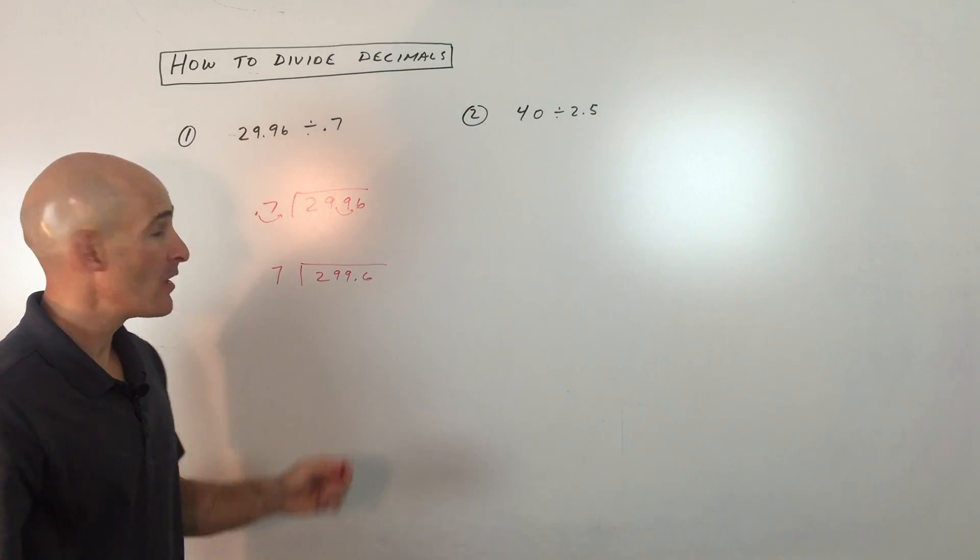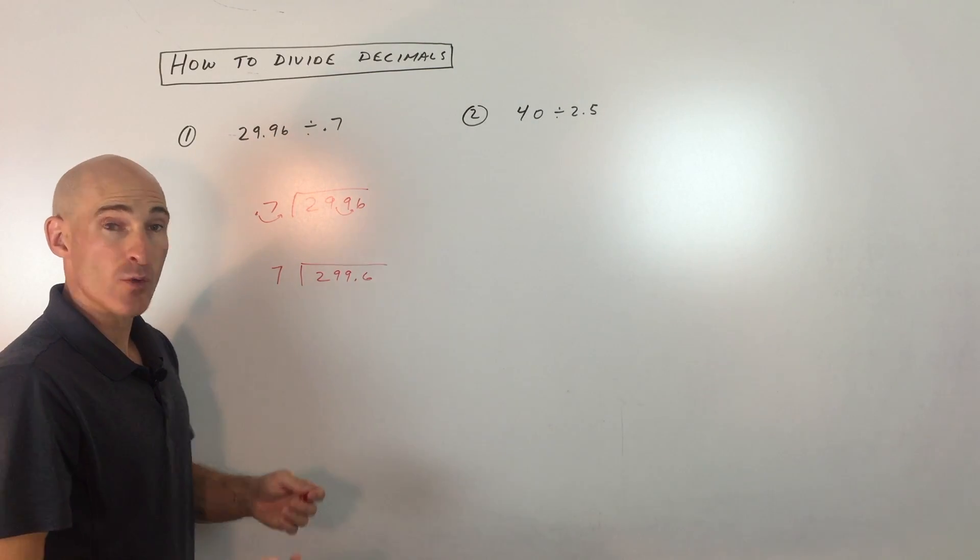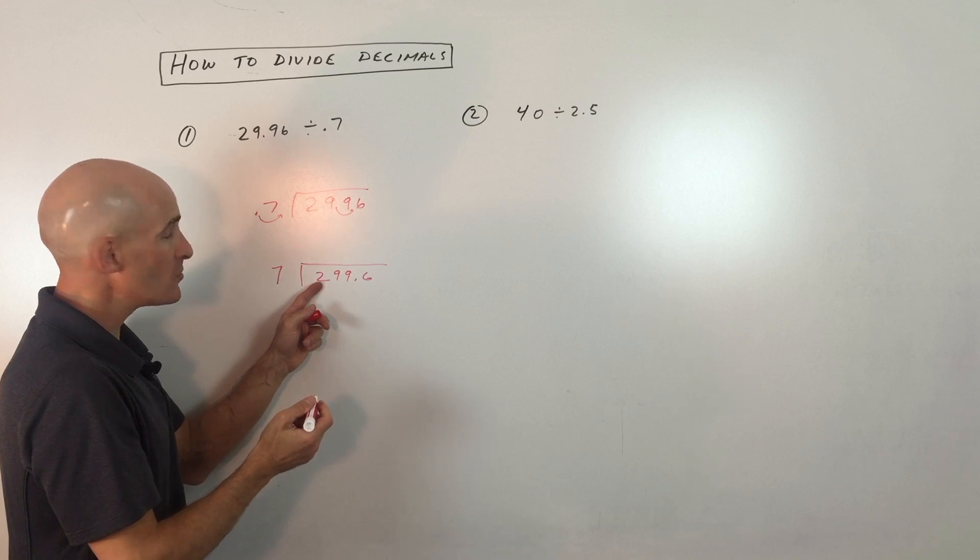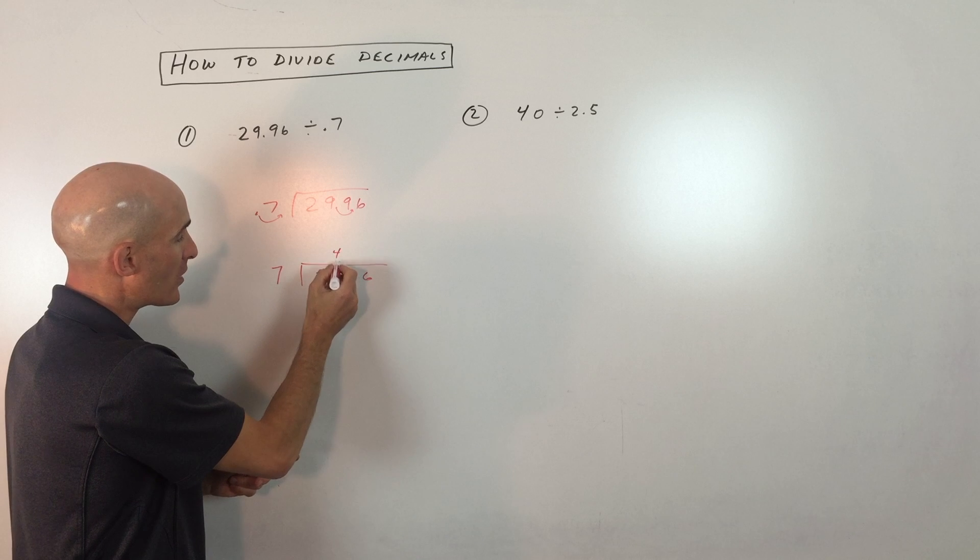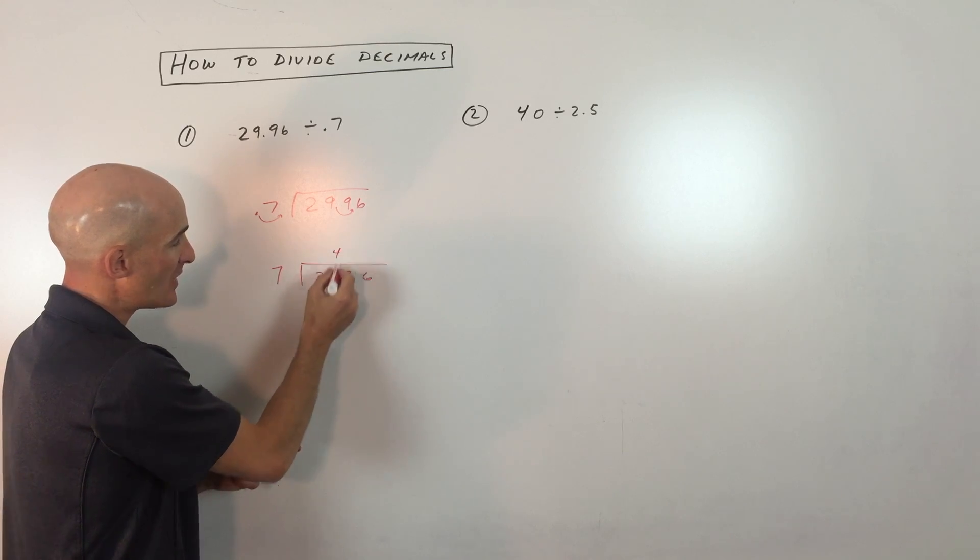A little bit easier now. Now we just proceed like normal and do our division. 7 goes into 2? No. 7 goes into 29? Yes. How many times? 4. So I put the 4 right above the 9.